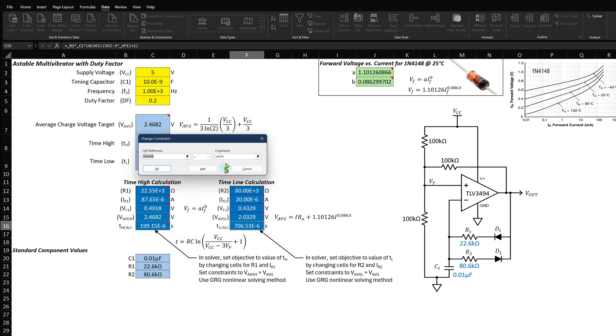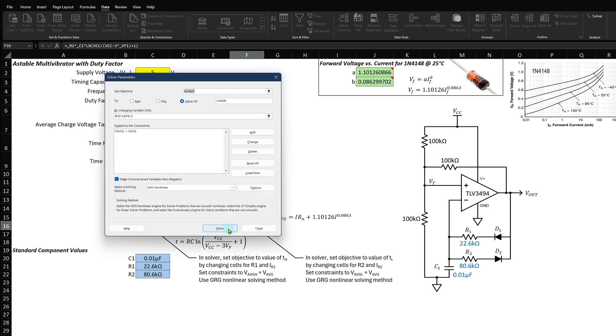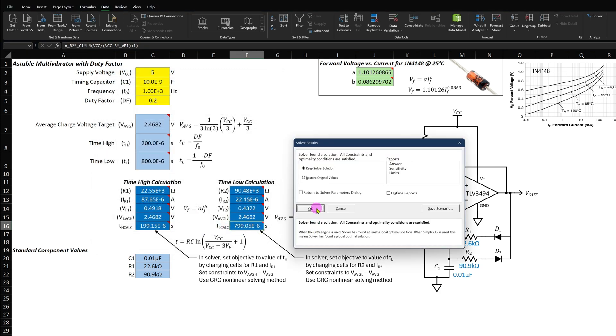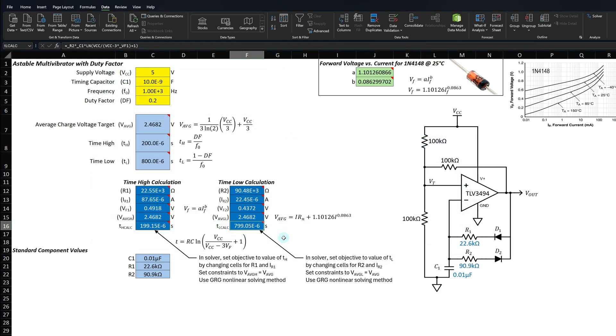Now we need to modify the constraint. Make the cell reference the V average for the low time and set it equal to the constraint of the target V average cell. Notice the Time High Calculation is very close to the target.